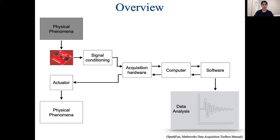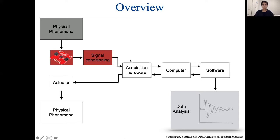Coming back to the diagram, in our lab the sensor will be an accelerometer. We use the sensor or transducer to go from the physical phenomenon into an electrical signal, typically in voltage. We might then decide we need to alter the signal in some way before sending it to the acquisition hardware. This step is called signal conditioning, and a lot of times we want to or need to change the signal to be able to use it later on for analysis.